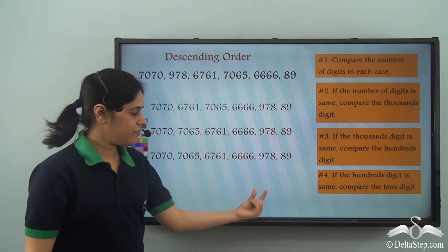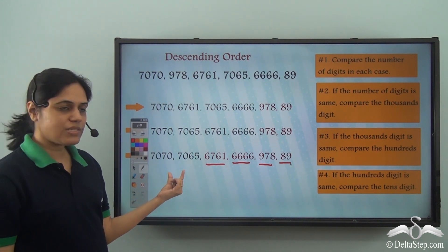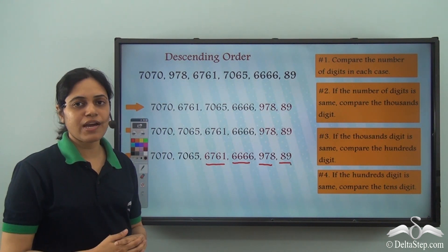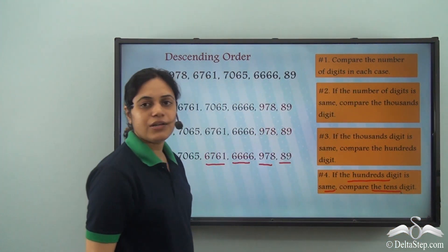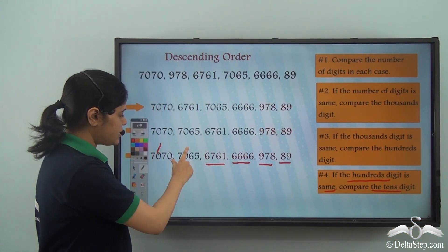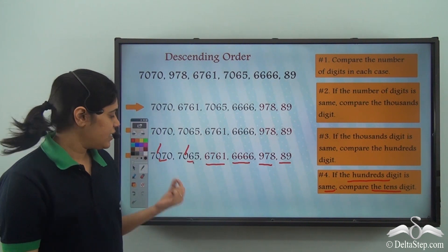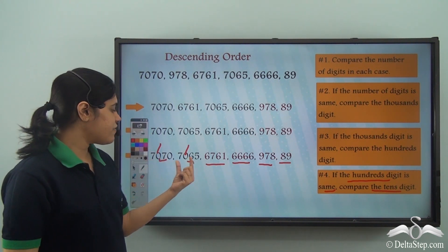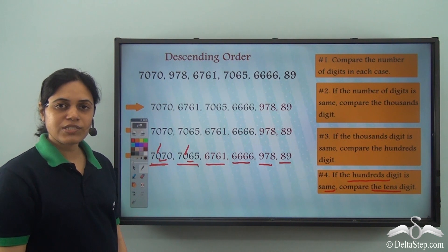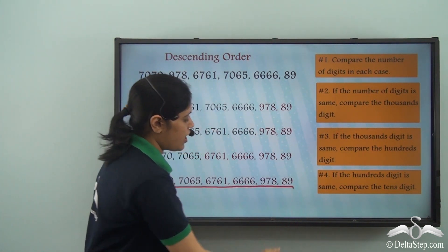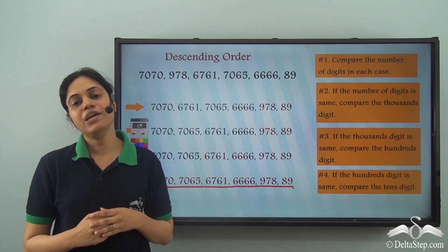So these four numbers are now arranged in the correct sequence: 7070, 7065, 6761, 6666, then 978, then 89. Now for 7070 and 7065, I go to rule four, which says if the hundreds digit is the same, compare the tens digit. The hundreds digit is the same, so I compare the tens digit: seven versus six. Seven is greater than six, so 7070 is greater than 7065 and comes before it. So this is in fact the correct order — these are the numbers arranged in descending order.